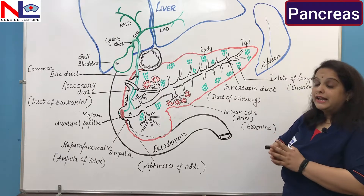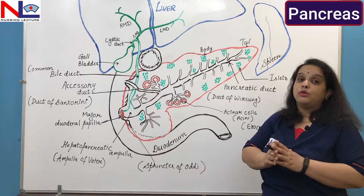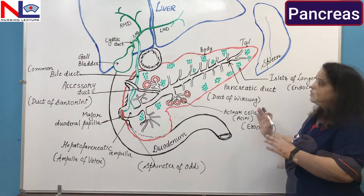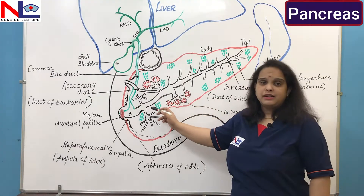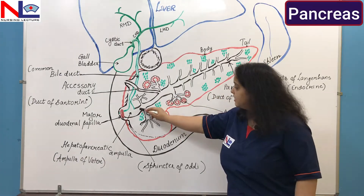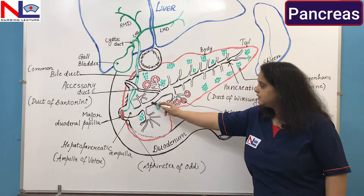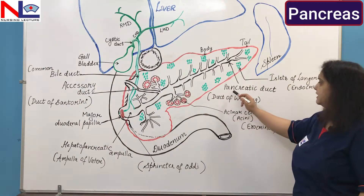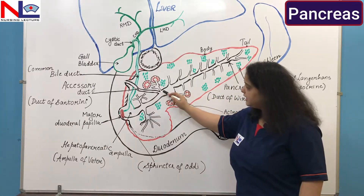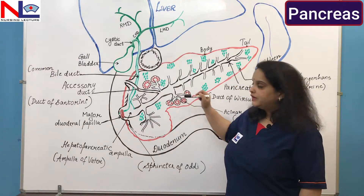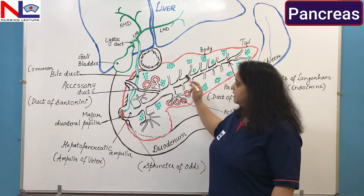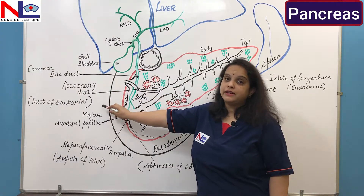In the pancreas there are certain cells that play an important role as exocrine as well as endocrine glands. Before that, we will see the duct system in the pancreas. There are two major ducts: the main duct running along the entire length of the pancreas is the pancreatic duct, also called the duct of Wirsung. The other duct, which branches from this main duct and runs obliquely and superiorly, is the accessory duct — the duct of Santorini.